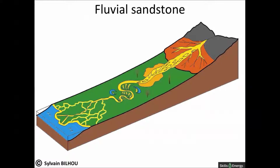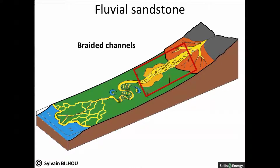Still in a continental environment, hydrocarbons can be found in fluvial sandstones. River complexes commonly form extensive and thick sand and mud bodies. There are many examples of large petroleum accumulations within such sand bodies. Rivers have a variety of forms, but their main channels may be braided or meandering, or anything between the two end members.